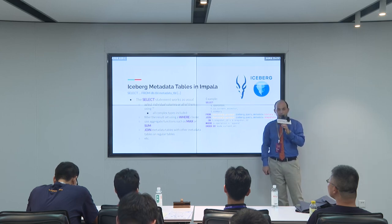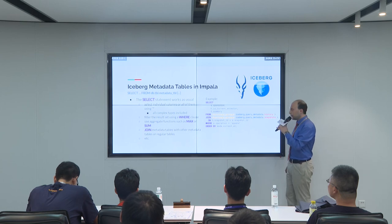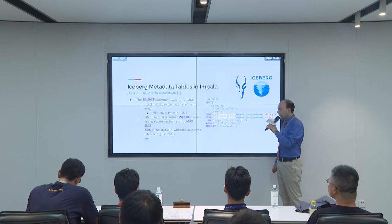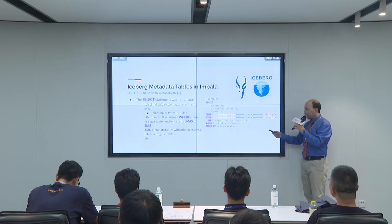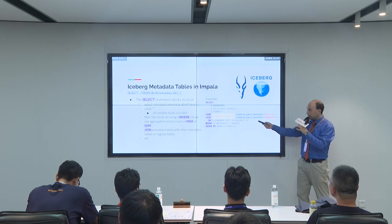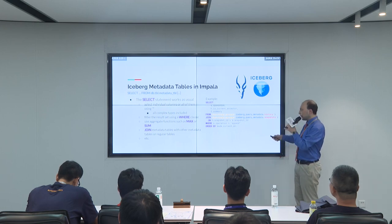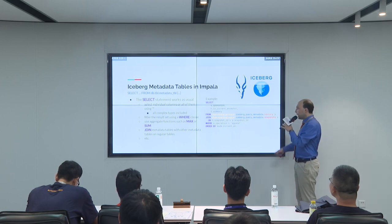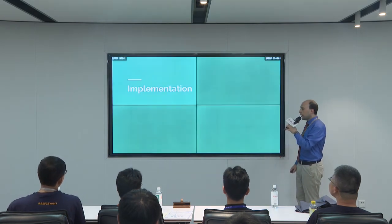You can filter the results you get from querying metadata tables, aggregate over them, and join them. Here's an example where you take two metadata tables from the same Iceberg table, join them on a condition, filter for only append operations, and sort the results.